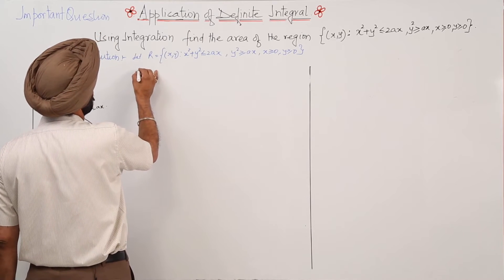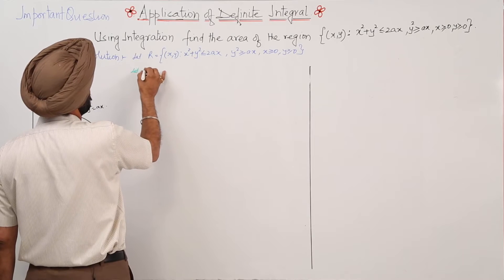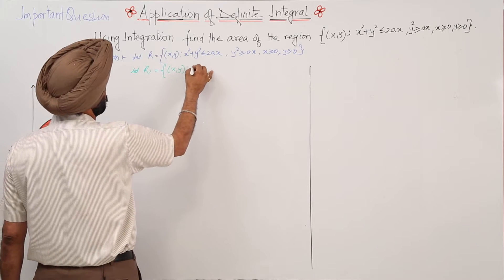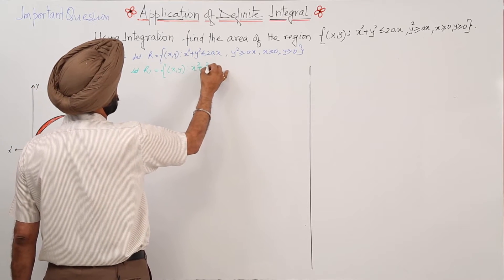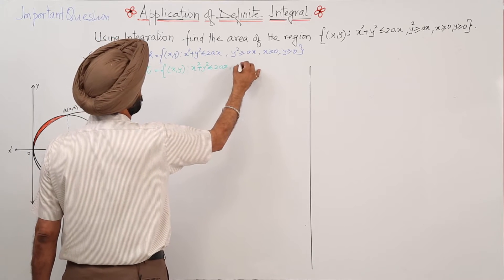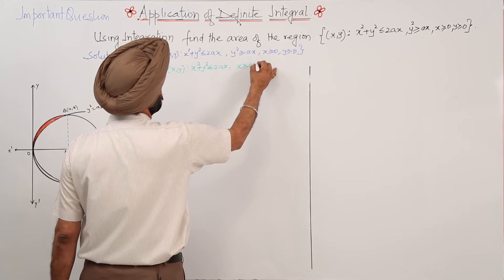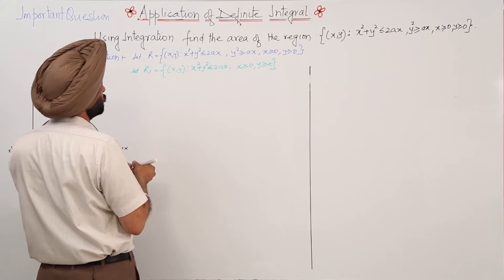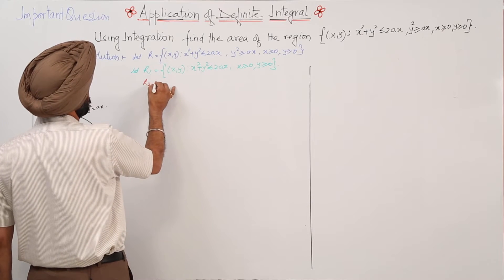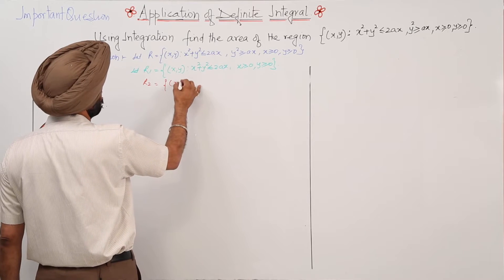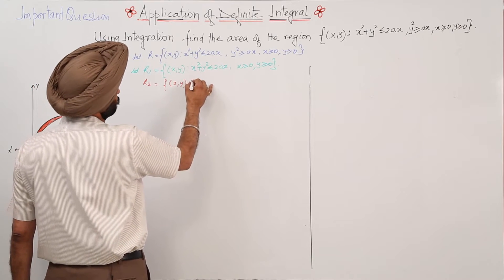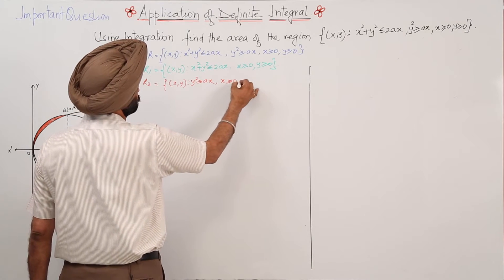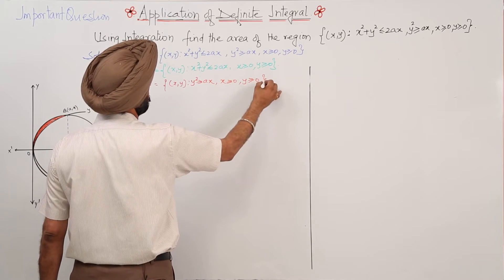Let R1 be the set such that x² + y² ≤ 2ax, x ≥ 0, y ≥ 0. And R2 is the set of (x, y) such that y² ≥ ax, x ≥ 0, and y ≥ 0.